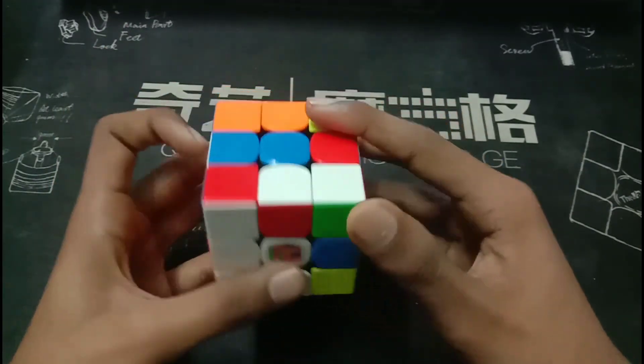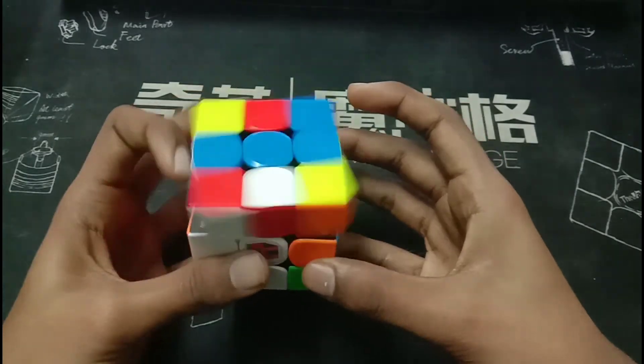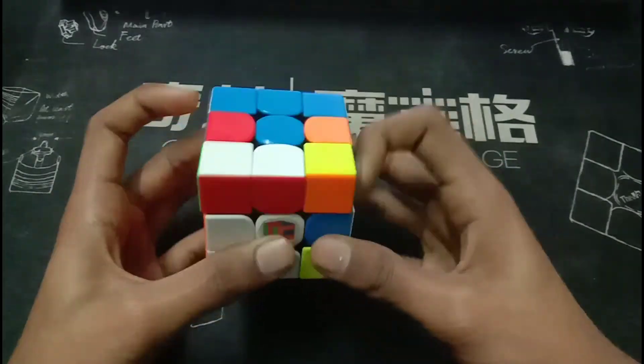And for the fourth pair, he inserts this corner first and then does this simple tool.